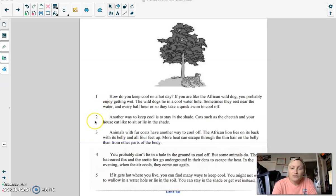Another way to keep cool is to stay in the shade. Cats, such as a cheetah and your house cat, like to sit or lie in the shade. Animals with fur coats have another way to cool off. The African lion lies on its back with its belly and all four feet up. More heat can escape through the thin hair on the belly than from the other parts of the body.